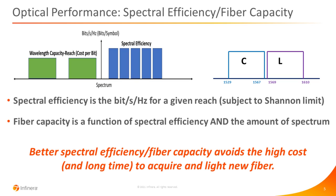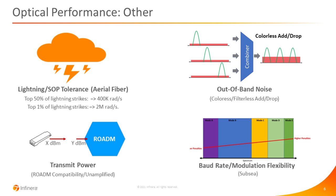Fiber capacity takes spectral efficiency and adds in the amount of spectrum. If we can increase the spectrum with extended C band, super C, or C plus L, that impacts fiber capacity. Better spectral efficiency and fiber capacity avoid the high cost and the long time required to acquire and light new fiber, which could be one of the most expensive parts of running an optical network. For a lot of networks, if we can get more out of our existing fiber, that has a very big economic benefit.